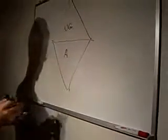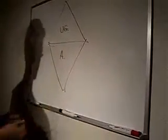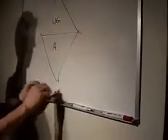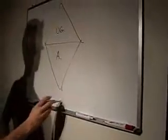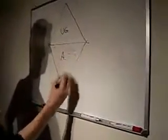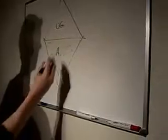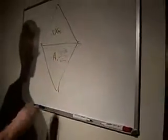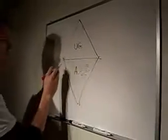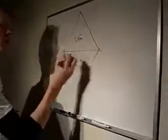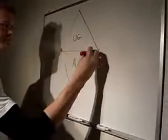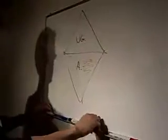Boundaries of the ischioanal fossa are as follows. The roof is the pelvic diaphragm. The floor is the perineal skin. Laterally, the ischium overlaid by the obturator internus. And posteriorly, the sacrotuberous ligament and the gluteus maximus muscle.